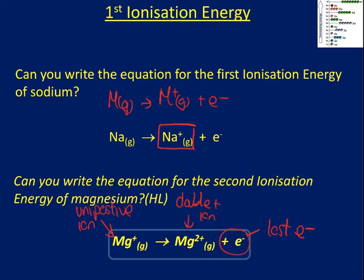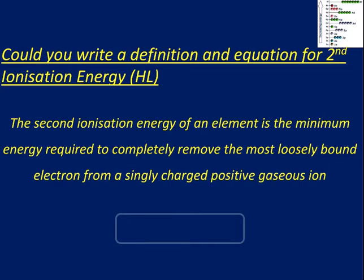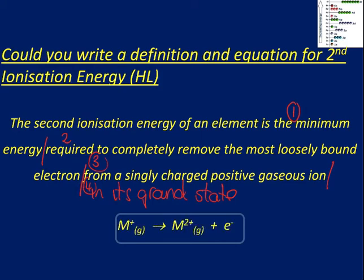So as well as being able to write the equations we also have to have a definition for the second ionization energy which is kind of similar to the first. So if you look at it again the second ionization energy of an element is the minimum energy required to completely remove the most loosely bound electron from a singly charged positive gaseous ion and we're just going to make the addition in its ground state. And again if we just use M for metal we have, this is as we've said earlier this is our singly positive unipositive ion, this is now a double positive ion and this is our last electron.